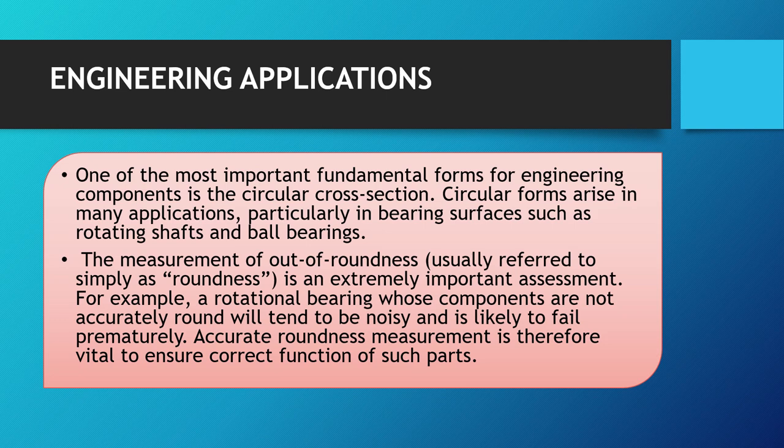One of the most fundamental forms for engineering components is the circular cross section. Circular forms arise in many applications, particularly in bearing shafts, self-rotating shafts, and ball bearings. The measurement of out-of-roundness is an extremely important assessment for manufacturers. For example, a rotational bearing whose components are not accurately round will tend to be noisy and is likely to fail prematurely. Therefore, accurate roundness measurement is vital for ensuring the correct functioning of such parts.